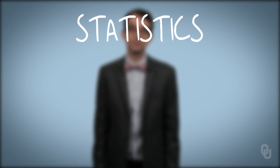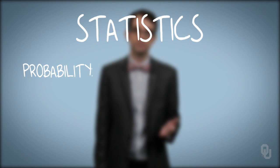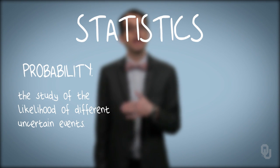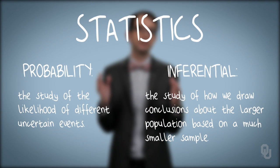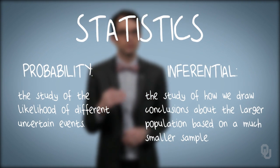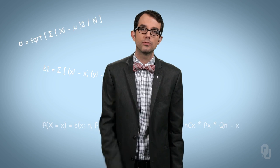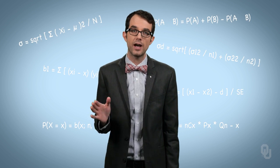Broadly, the field of statistics consists of two major topics: probability, or the study of the likelihood of different uncertain events, and inferential statistics, or the study of how we draw conclusions about the larger population based on a much smaller sample. We'll address a little of the theory that underpins probability and inferential statistics, but will primarily focus on understanding and applying basic tools to study uncertain situations in a variety of engineering contexts. An ability to analyze data describing processes and systems is important to their design and improvement, and taking a statistics course is a great first step in being able to make informed decisions as an engineer.